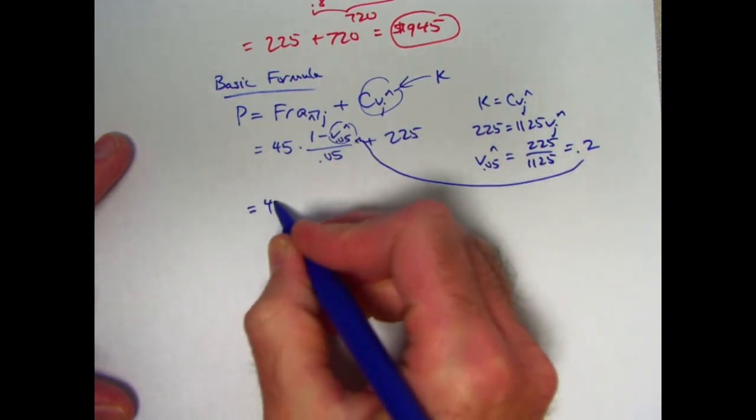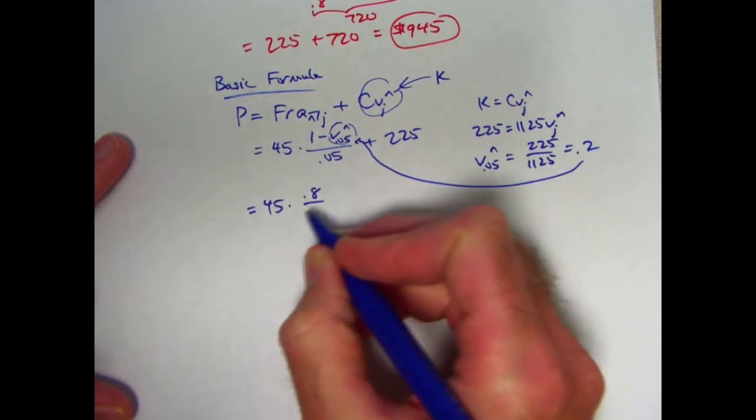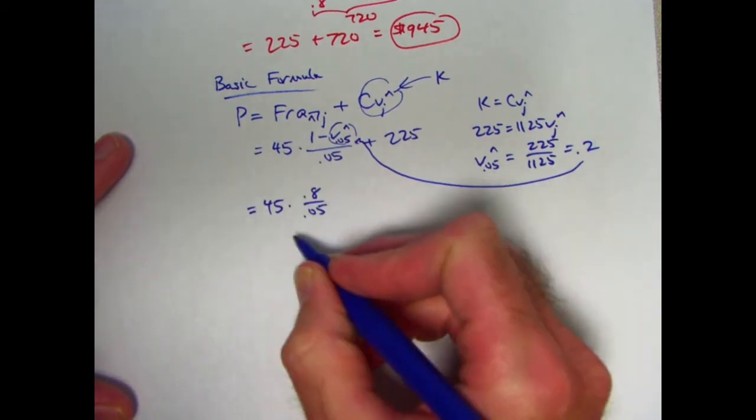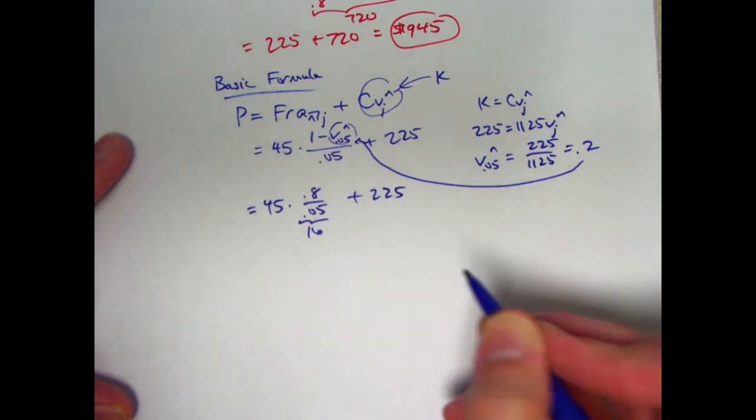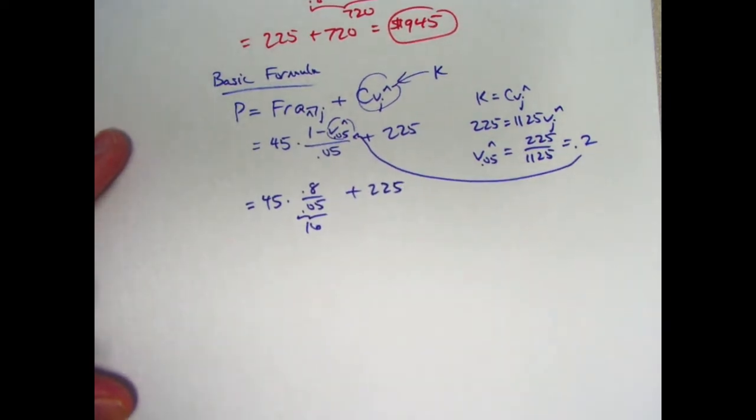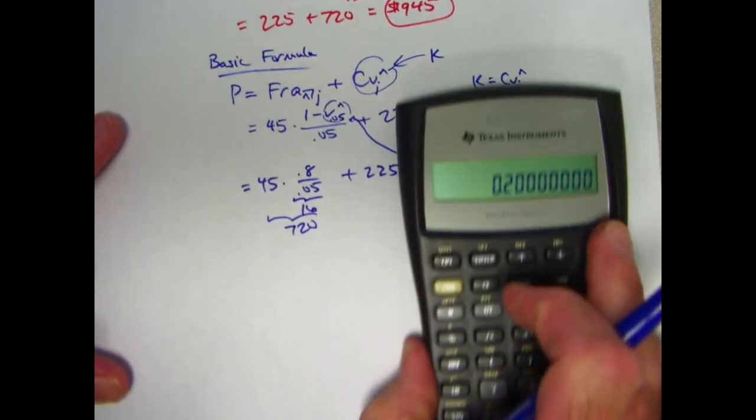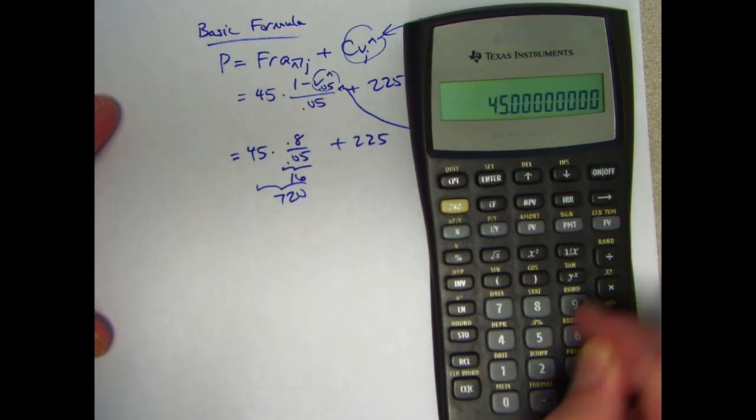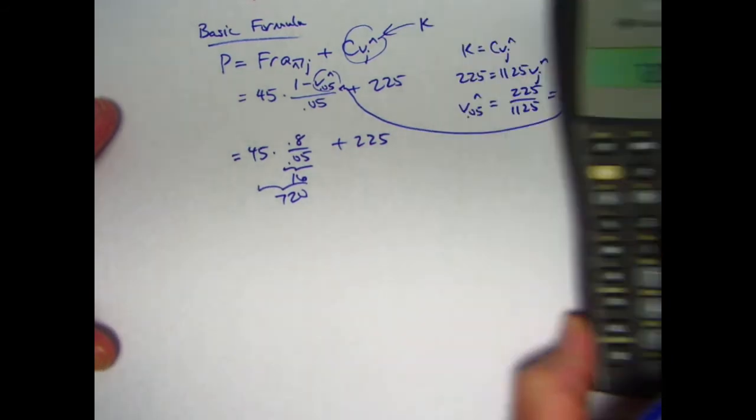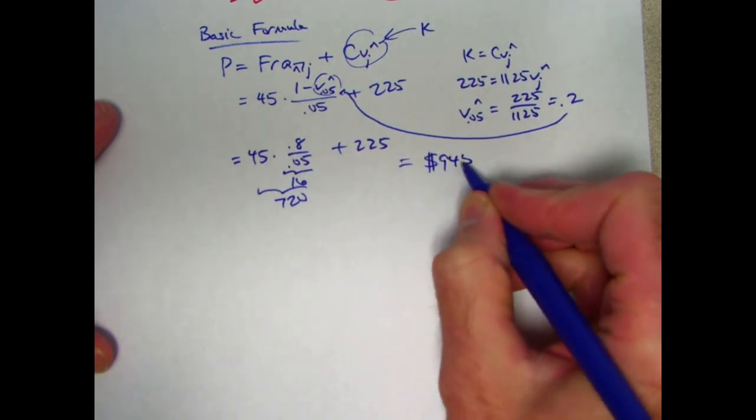So we get 45 times 1 minus 0.2 is 0.8 divided by 0.05. This will be 16. 45 times 16 should be 720. Let's just double check that quick. 45 times 16 is 720. You do get the same answer. 945 for the price. Okay. Not too bad.